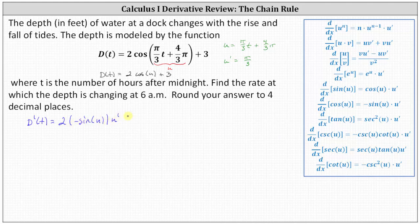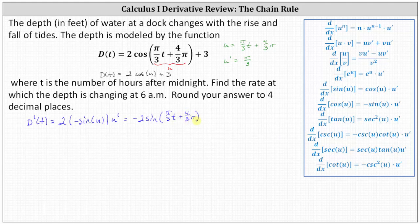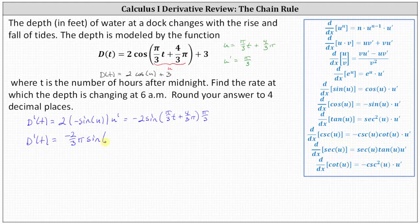Times u prime, and then plus the derivative of three, which is zero. Writing this back in terms of t, we have negative two sine of u, where u is pi divided by three times t plus four-thirds pi, times u prime, where u prime is pi divided by three. So d prime of t equals negative two-thirds pi times sine of the quantity pi divided by three times t plus four-thirds pi.